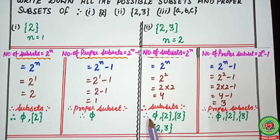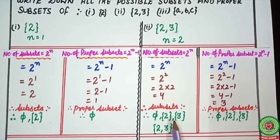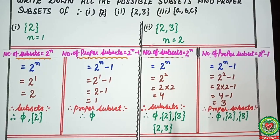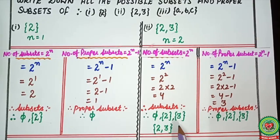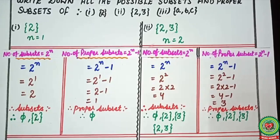So the subsets of {2, 3} are: first, the empty set ∅; second, {2}; third, {3}; and fourth, the set itself {2, 3}. For proper subsets, use the easy trick: write all the subsets you listed except the set itself. So the proper subsets are: ∅, {2}, and {3}.